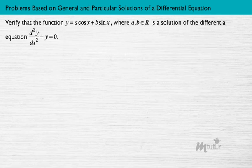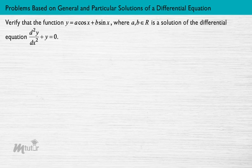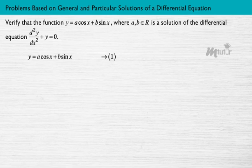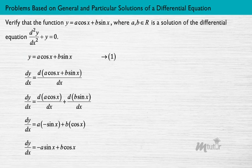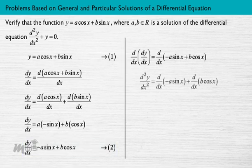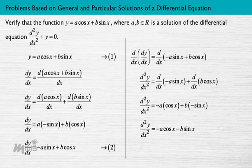Verify that the function y = A·cos(x) + B·sin(x), where A and B belong to ℝ, is a solution of the differential equation displayed on the screen. From the question, we have y = A·cos(x) + B·sin(x) — name it equation 1. Differentiating equation 1 with respect to x, we get the first derivative as displayed on the screen — name it equation 2. Again differentiating equation 2 with respect to x, we get the second derivative — name it equation 3.